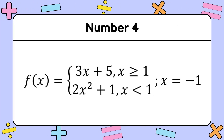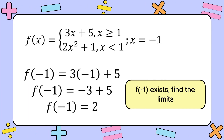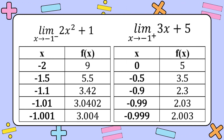For the fourth item, f of x equals 3x plus 5 if x is greater than or equal to negative 1, and 2x squared plus 1 if x is less than or equal to negative 1, given x equal to negative 1. Since the given is negative 1, we use 3x plus 5 to evaluate the function. Substituting negative 1: f of negative 1 equals 3 times negative 1 plus 5, which equals negative 3 plus 5, giving positive 2.